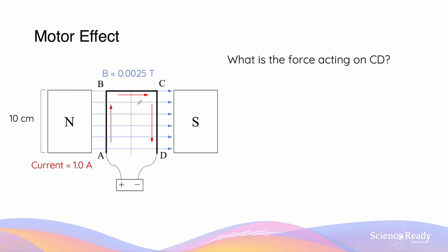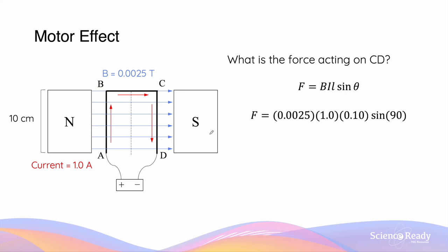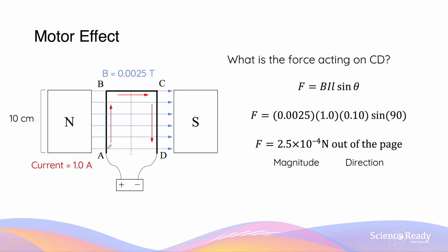The force acting on AB and CD would be the same. If we use the equation and substitute the numbers for the magnetic field strength, the current, and the length of the conductor, we'll get the same magnitude of force as before, acting on side AB.